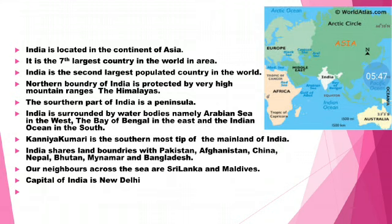India is bounded by very high mountain ranges — the Himalayas — in the northern part. These boundaries are very protective to India. The Himalayas provide a natural protection to India from any kind of invasion from outside. The Himalayas do not allow any enemy to enter inside our country. The Himalayas also play an important role in influencing the climate of India.